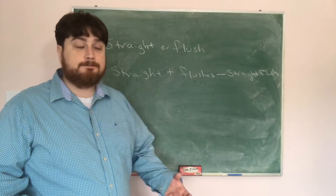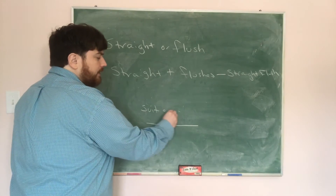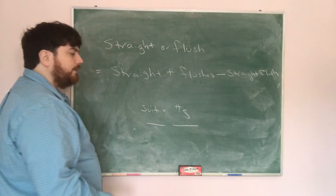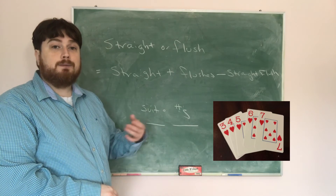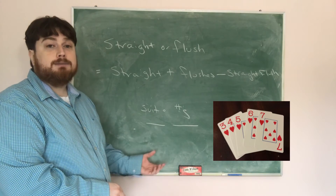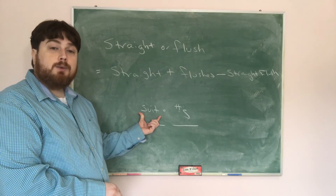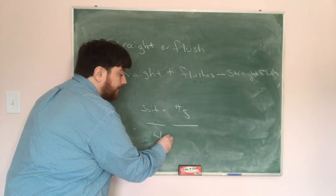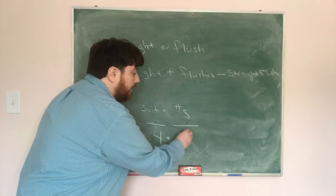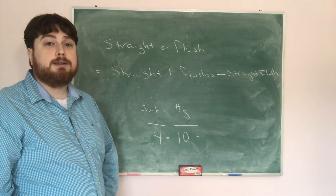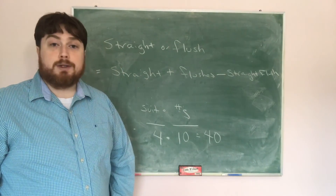For a straight flush, we need five cards numerically in a row and all the same suit. We have 4 choices for the suit — same as for a flush — and 10 choices for the lowest number — same as for a straight. So the total number of straight flushes is 4 × 10 = 40.